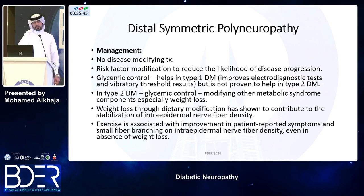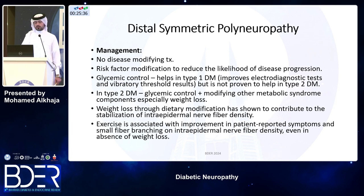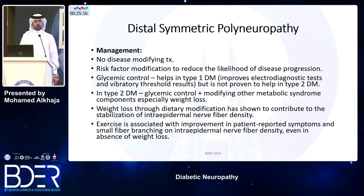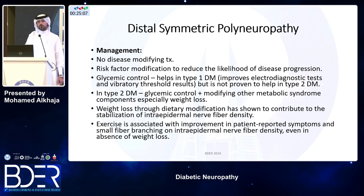There is no disease-modifying agent, but risk factor modification is possible. In type 2 diabetes, glycemic control alone will not suffice — you need to target metabolic syndrome. In type 1 diabetes, glycemic control works. Weight loss has been shown to improve nerve fiber density on skin biopsy, and exercise has been shown to stabilize nerve fiber density loss in type 2 diabetes.